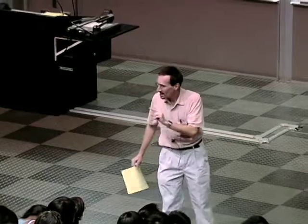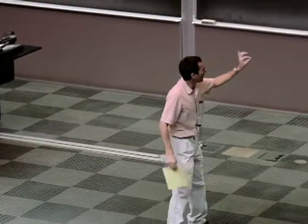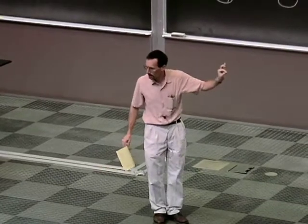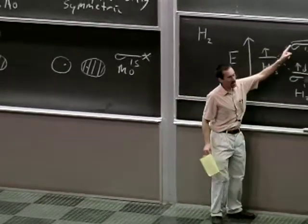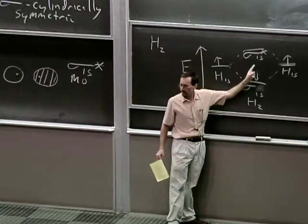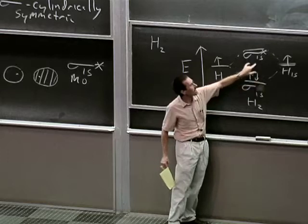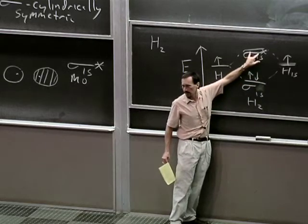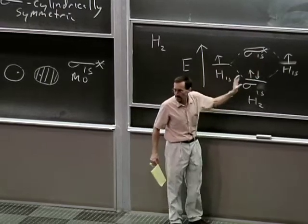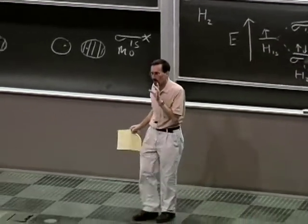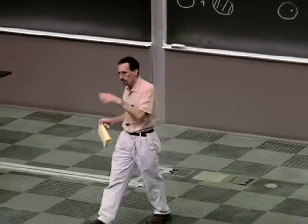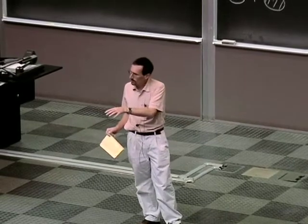Is there ever a time when the anti-bonding molecular orbital is filled? Yes. If you give H₂ another electron, it can only go into the anti-bonding orbital. Yet the net energy of two electrons in the bonding orbital and one electron in the anti-bonding molecular orbital is still more stable than H⁻ and H dot. So there would be a bond — it would be half a bond in strength — even with one electron in the anti-bonding molecular orbital.